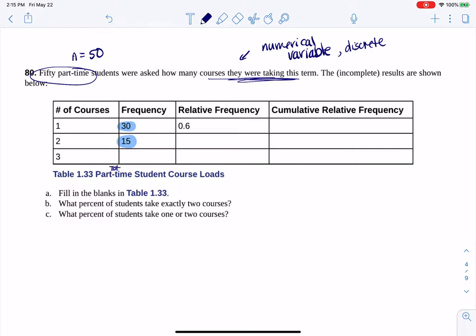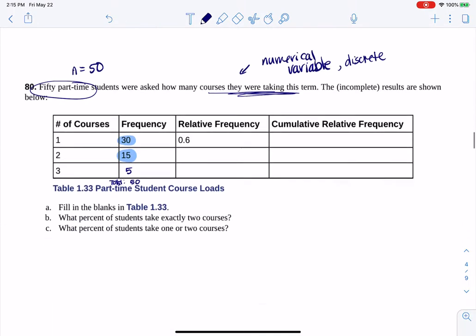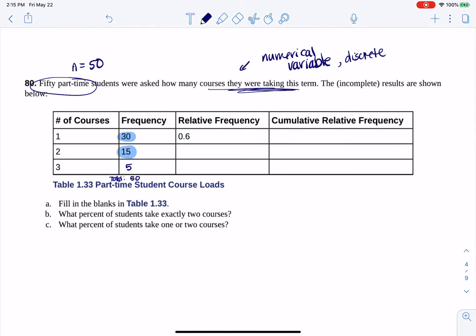So if that total needs to come to 50, that frequency column always needs to total out to my sample size. So I can use subtraction and figure out that 5 students must have taken 3 courses.